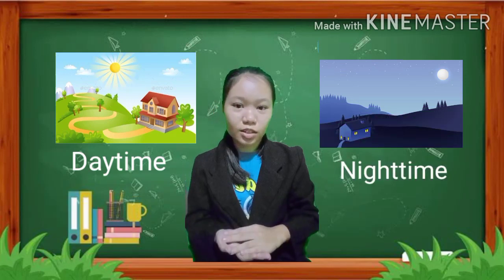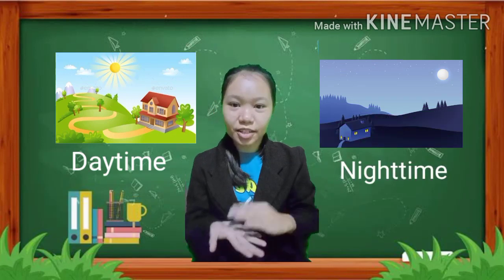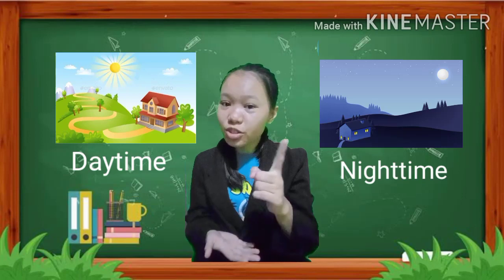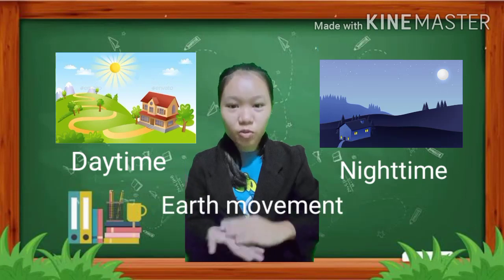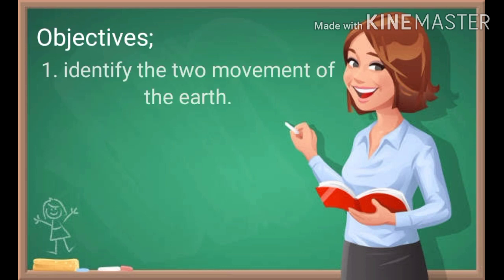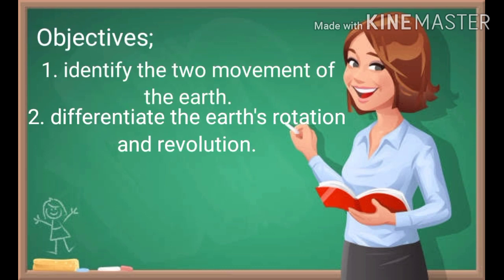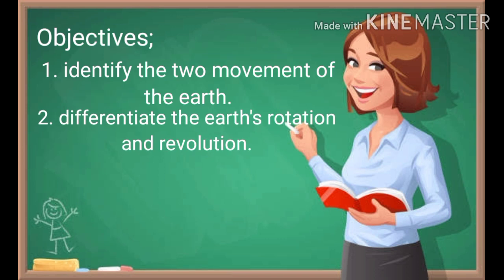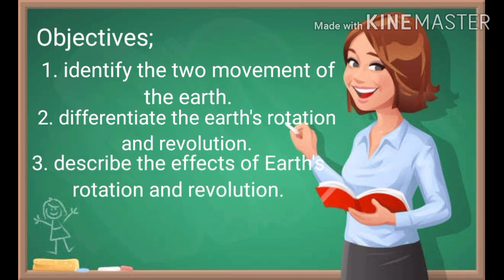What do you think is the reason why we have day and night? That's right — because of the Earth's movement. Our goals for today's lesson are: number one, identify the two movements of Earth; number two, differentiate the Earth's rotation and its revolution; number three, describe the effects of Earth's rotation and revolution.